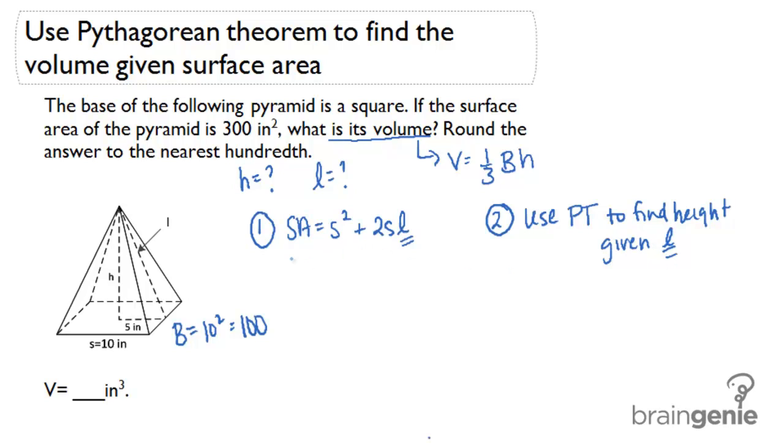The first thing we should do is solve backwards to figure out the slant height. I know that the surface area is 300. So 300 equals 10 squared plus 2 times 10 times L. That will be 300 equals 100 plus 20 times L. If I solve this, I get 200 equals 20L. And if I divide both sides by 20, I get slant height equals 10. So the slant height is 10 inches.